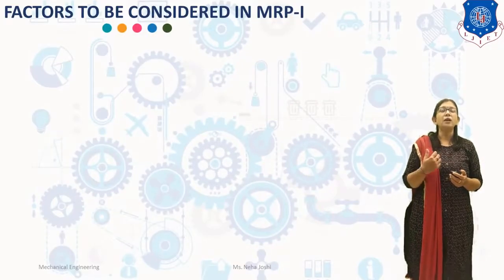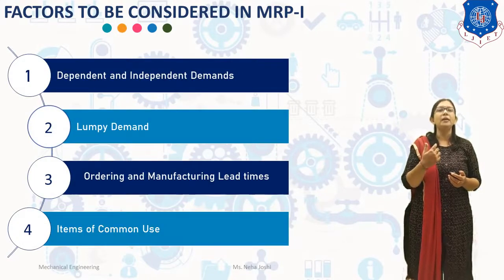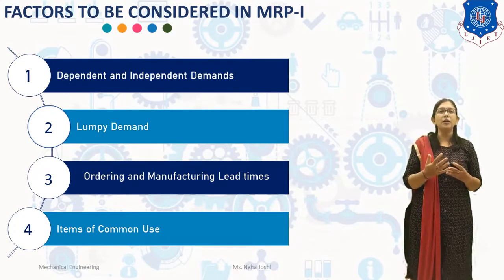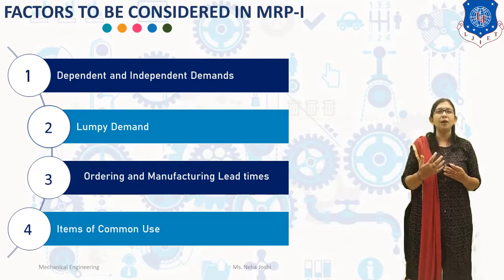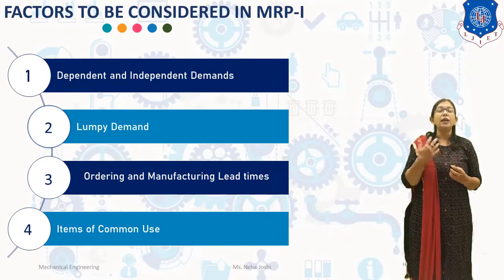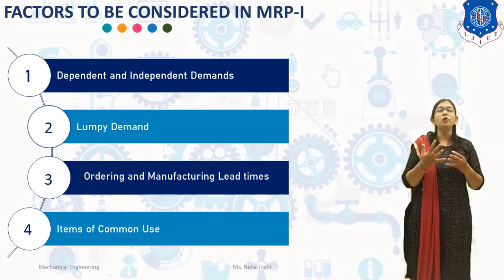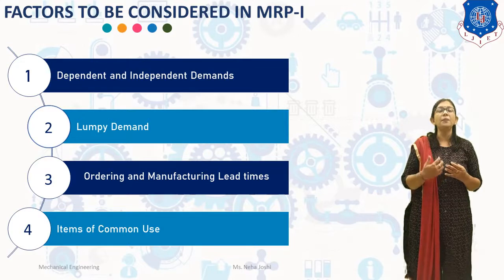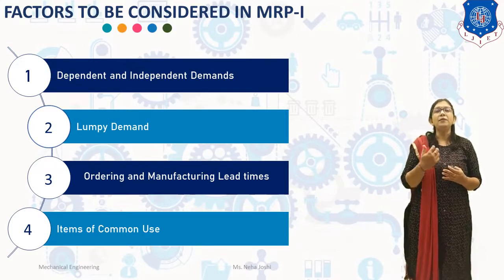Now, factors to be considered in MRP-1. The first factor is dependent and independent demands. Dependent demand means the demand for item A depends upon the demand for item B. For example, the demand for the raw material depends upon the demand for a particular component, and the demand for the component in turn depends upon the market demand for the product of which the component is a part. Therefore, in a dependent demand, it is necessary only to forecast the market demand for the product and establish the delivery schedule. Based on the delivery schedule, the requirement for the component and raw material can be precisely estimated. MRP-1 is a very effective tool in estimating requirements related to dependent demands.